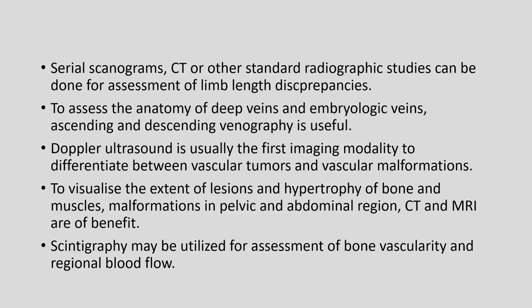Serial scanograms, CT, or other standard radiographic studies can be done for assessment of limb length discrepancies. To assess the anatomy of the deep veins and embryologic veins, ascending and descending venography is useful. Doppler ultrasound is usually the first imaging modality to differentiate between vascular tumors and vascular malformations. To visualize the extent of lesions and hypertrophy of bone and muscles, as well as malformations in the pelvic and abdominal region, CT and MRI are of benefit.